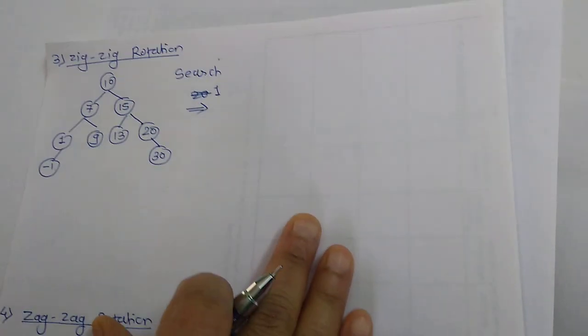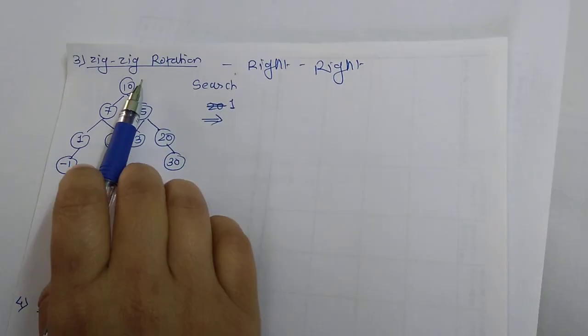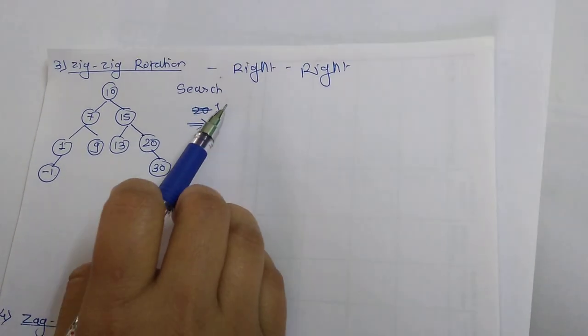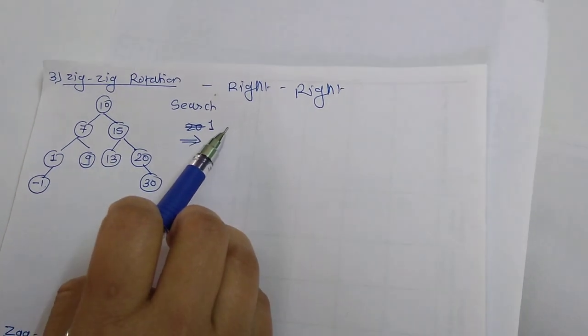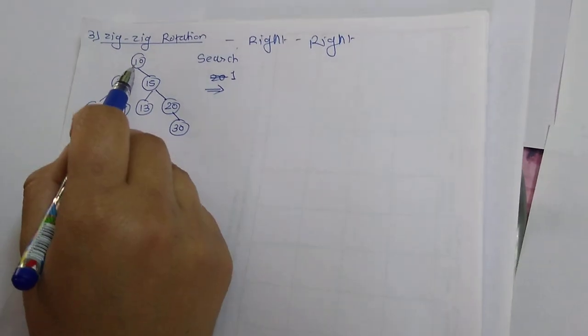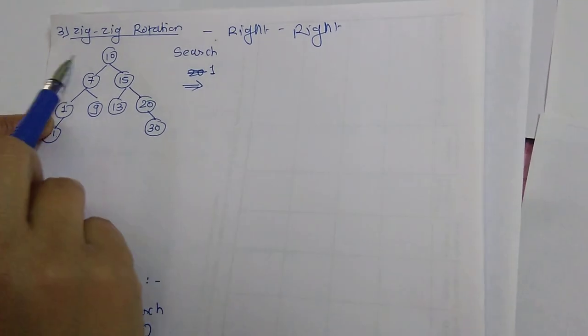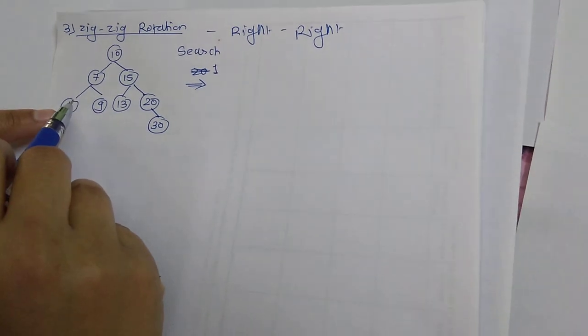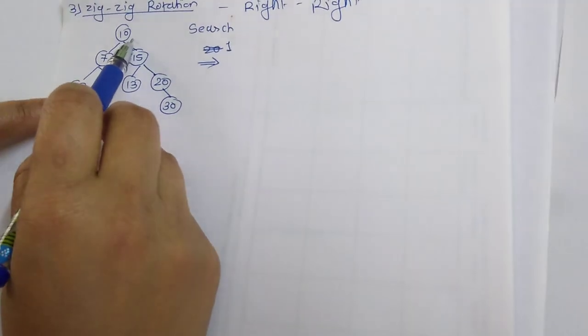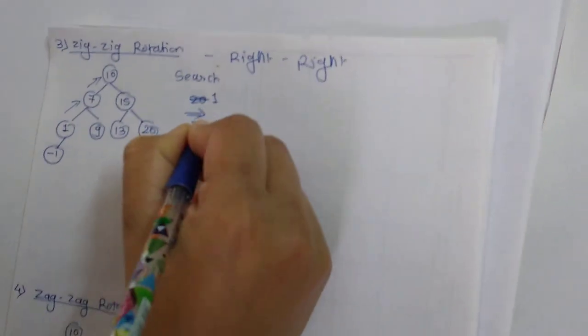Next is the zig-zig rotation. Zig means right, so zig-zig is a right-right rotation. When performing this rotation, the element should have a parent as well as a grandparent. Suppose I want to search 1. 1 is less than root, so it appears in the left subtree. 1 is also less than 7, so I get the position of 1. In the zig-zig rotation, the element must have a parent and grandparent. The first operation should be performed on the grandparent — so two right rotations will be performed; the first right rotation is on the grandparent.